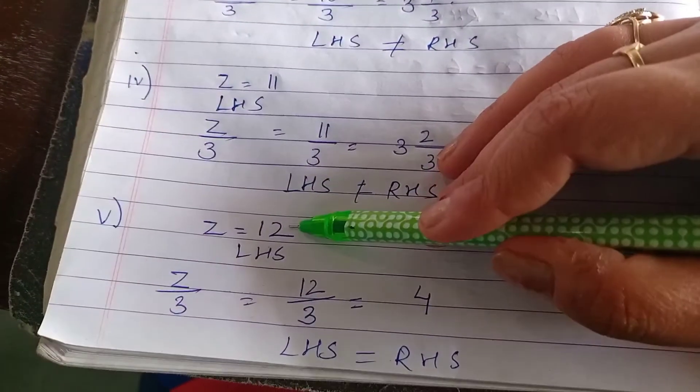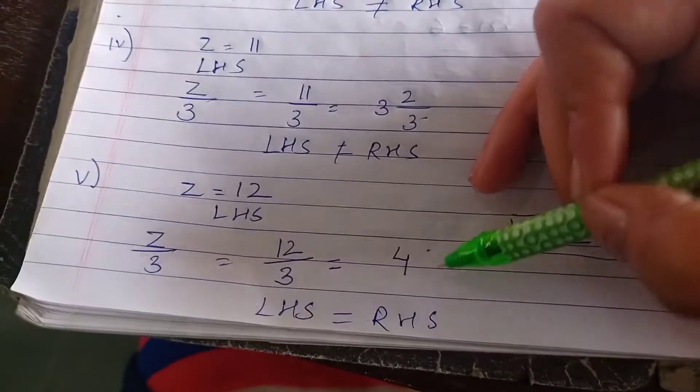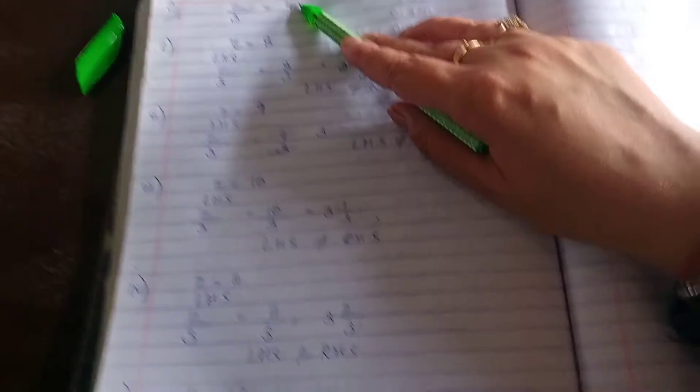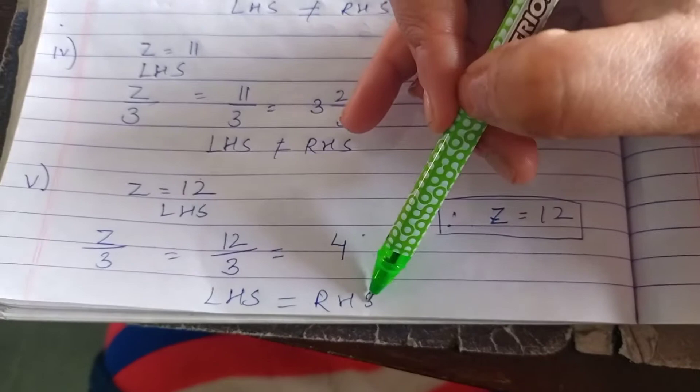Now fifth, z equals 12. 12 divided by 3 is 4. Yes, we have to find our answer as 4, which we got with 12. Therefore, LHS equals RHS, and our answer for z is 12.